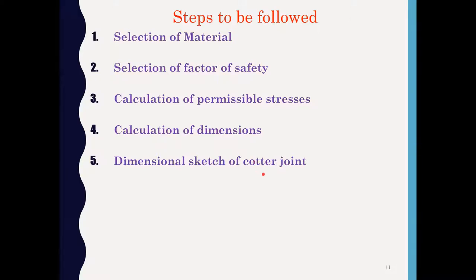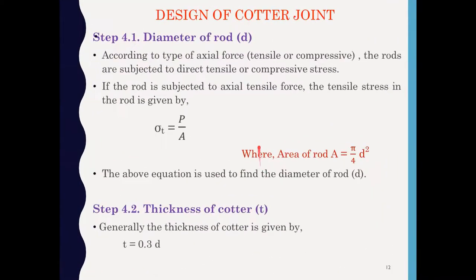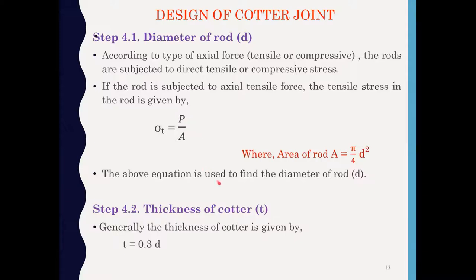Step 4.1: Diameter of the rod. When the axial force is applied on the cotter joint, the rod is subjected to tensile failure. The general formula for tensile failure is sigma_t = P / A, where P is the load and A is the resisting area. For the rod, the resisting area is (π/4) × D². Putting the values of sigma_t and P, we can find the diameter of the rod.